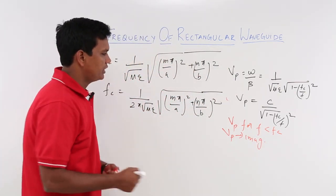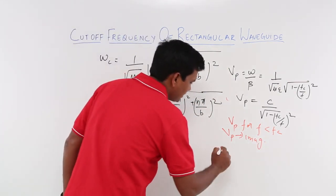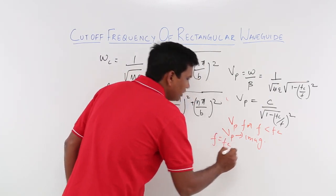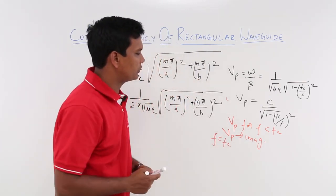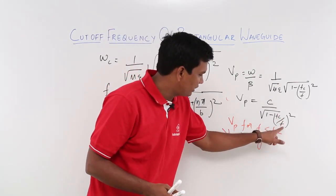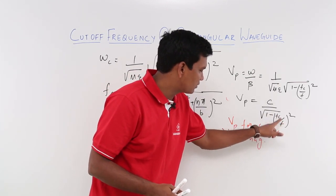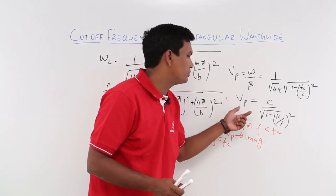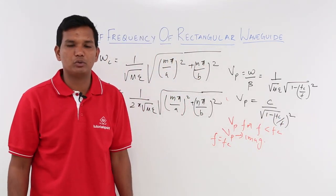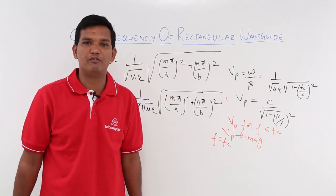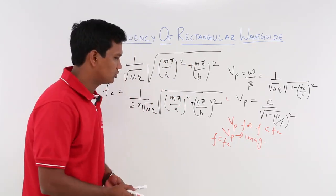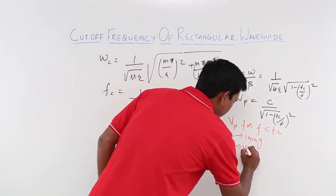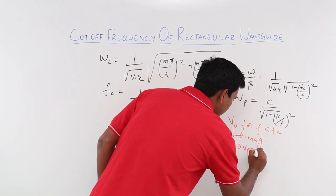What if f is equal to f_c? Then (f_c/f) becomes 1, so 1 minus 1 equals 0, meaning your phase velocity is 0. So again, your wave will not travel — v_p equals 0.